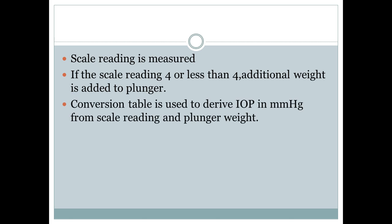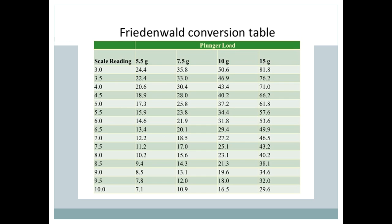For converting those grams into IOP in mmHg, you have to use the Friedenwald conversion table. I'll show you how to convert it. Suppose your instrument is using 5.5 gram and your scale reading shows 5.5, which means you are not adding any additional weight, so your IOP will be 15.9 mmHg. And suppose after adding weight your reading shows 5.5, then 23.8 mmHg will be your IOP.